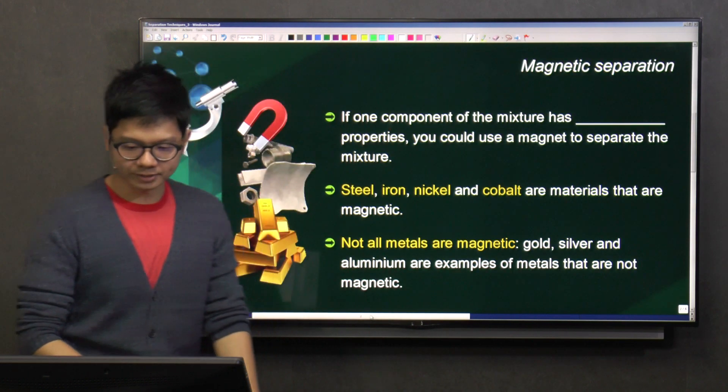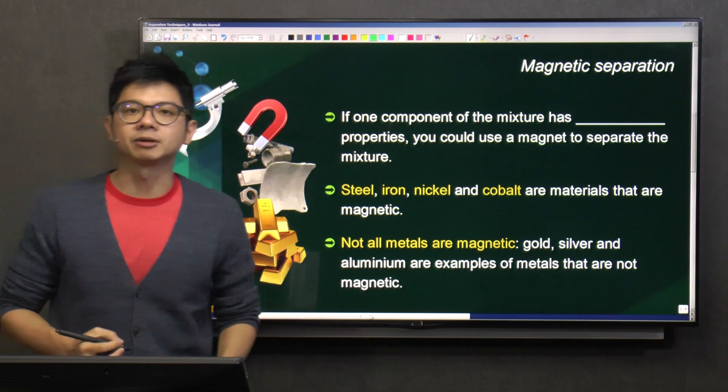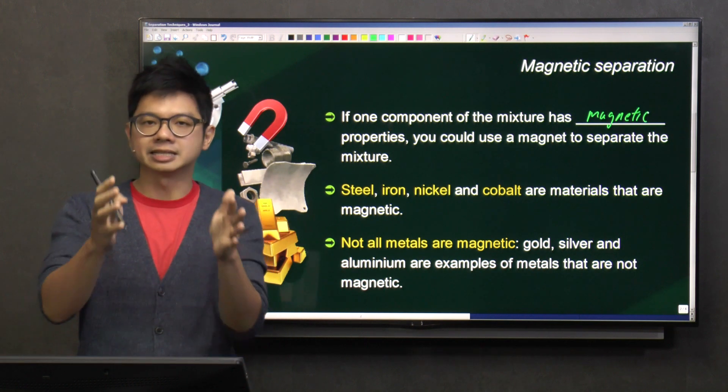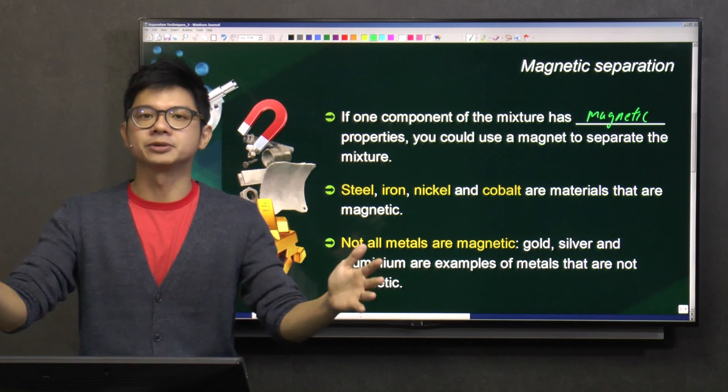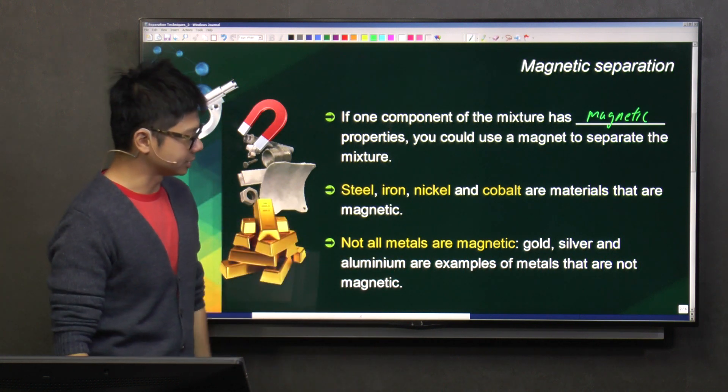So with this, if one component of the mixture has magnetic properties, so what do I mean by magnetic properties? That means they are magnetic materials, and we can use a magnet to separate the mixtures.